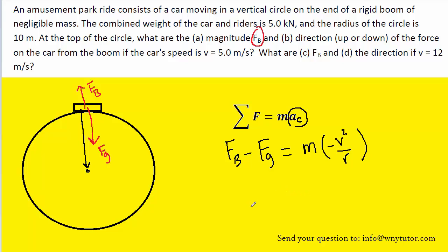We can rewrite the equation as follows. Basically we just move the negative sign into the front of MV squared over R, and then we can go ahead and add Fg to both sides so that we can solve for the boom force.